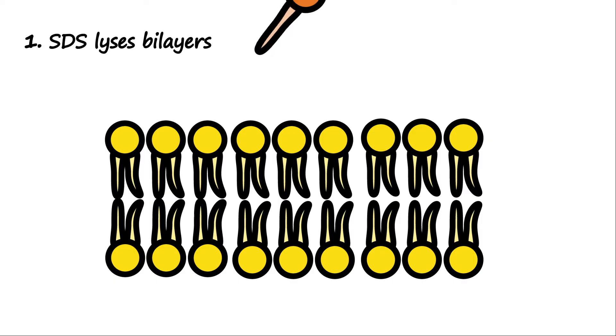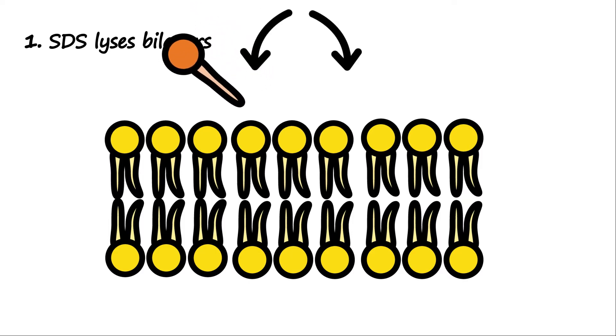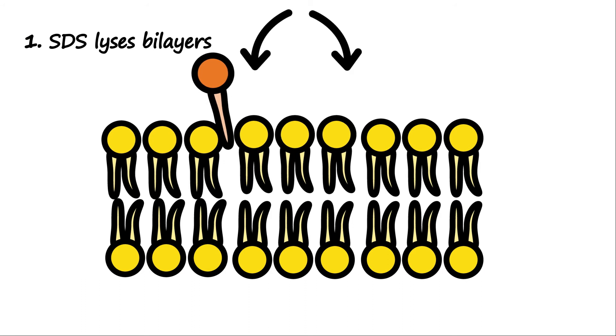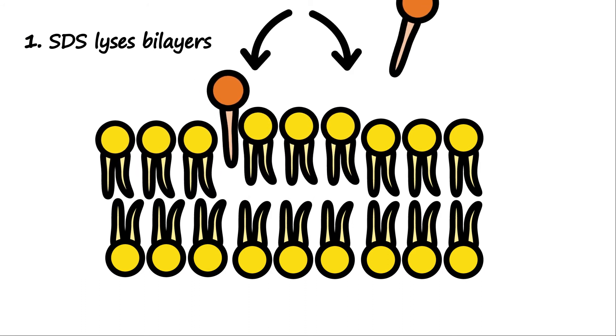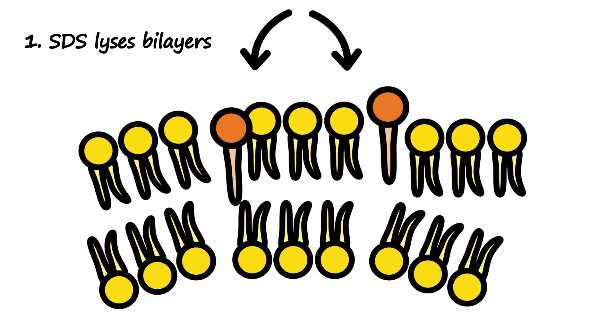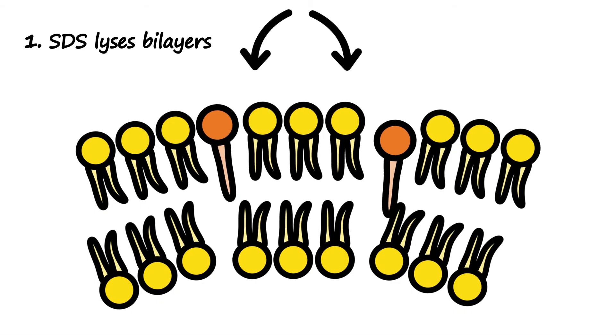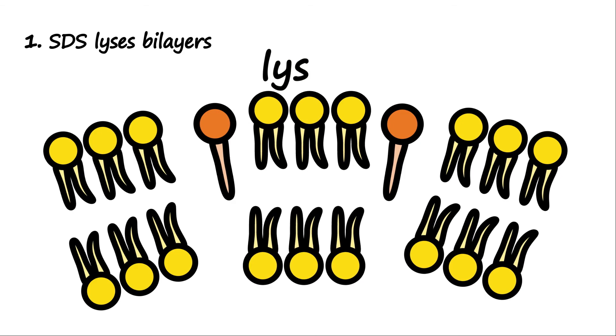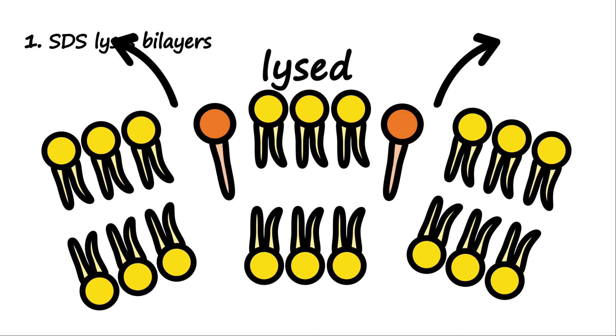When cellular membranes encounter SDS micelles, two things are likely to happen. First, conical SDS molecules can insert into the lipid bilayer, burying their lipophilic tail in the hydrophobic interior of the membrane. This causes a curvature stretch on the membrane, which is likely to rupture and create holes. The cell is considered lysed and the content is released.